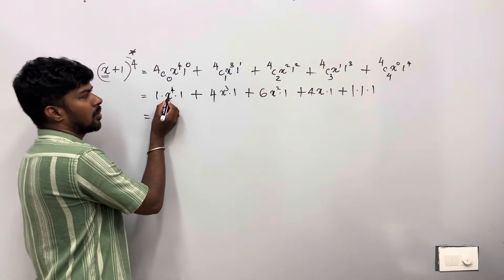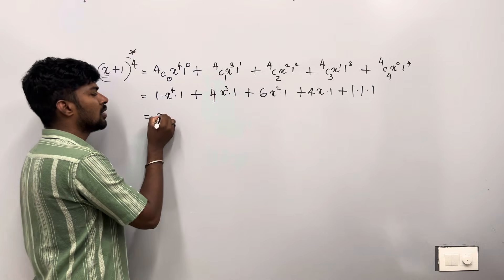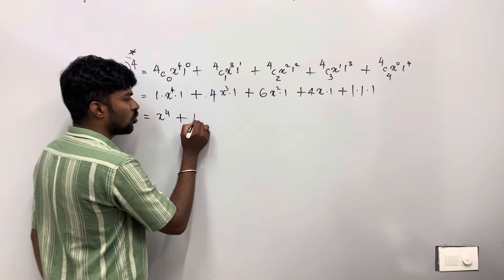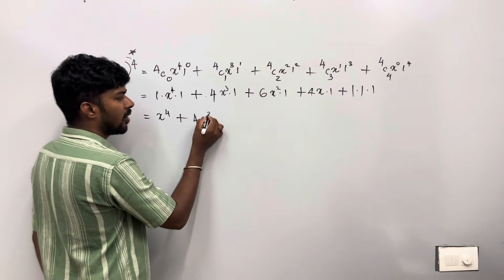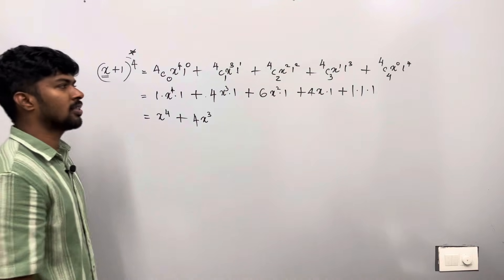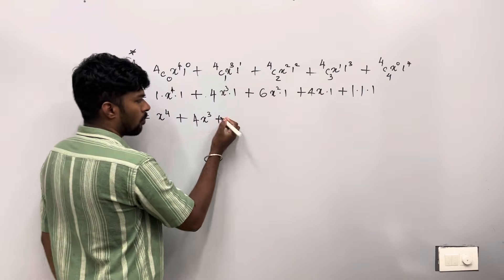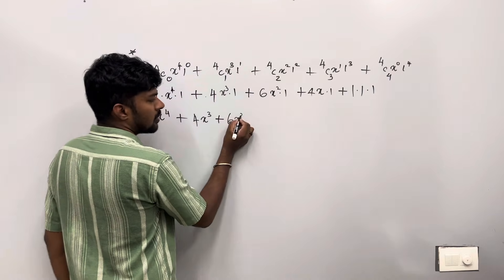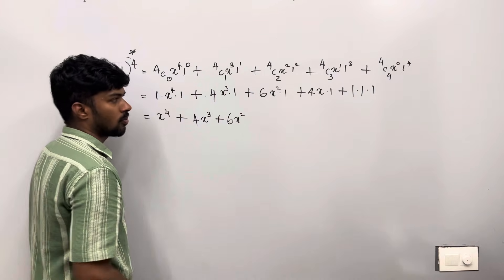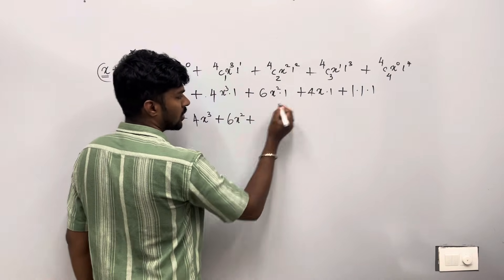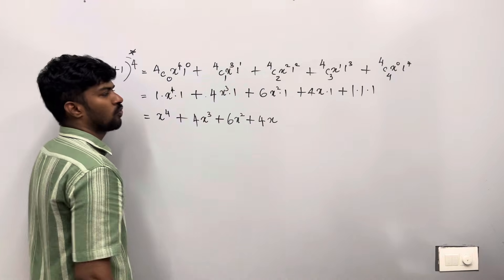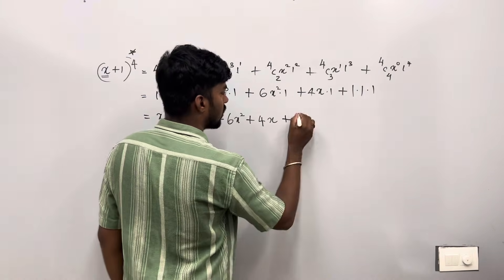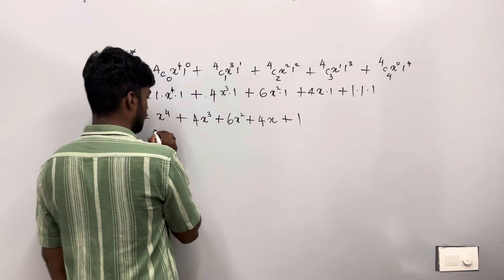The answer: x raised to 4 into 1 is x raised to 4. Then 4 into x cube — 4x cube. Plus 6 into x squared into 1 — that's 6x squared. Plus 4x into 1 — that's 4x. Plus 1 into 1 into 1 — the answer is 1.